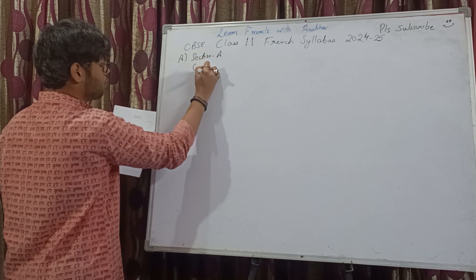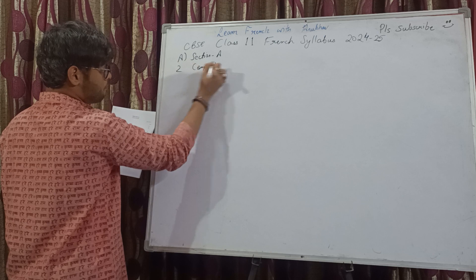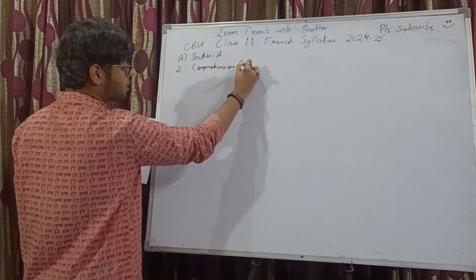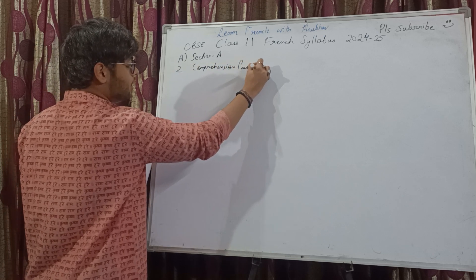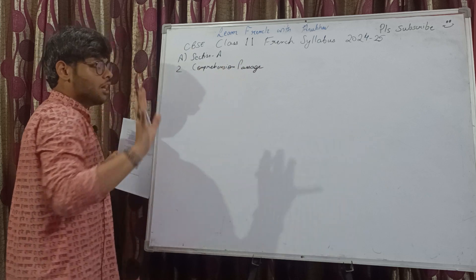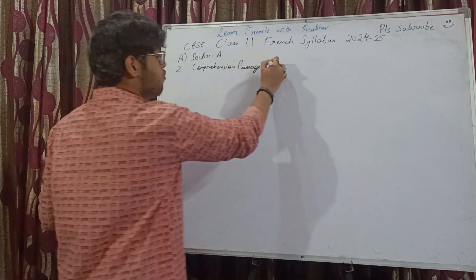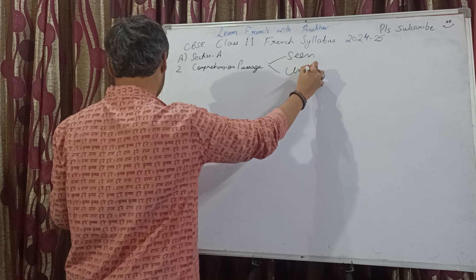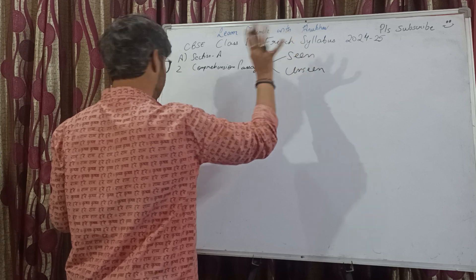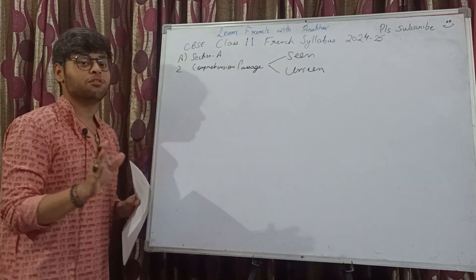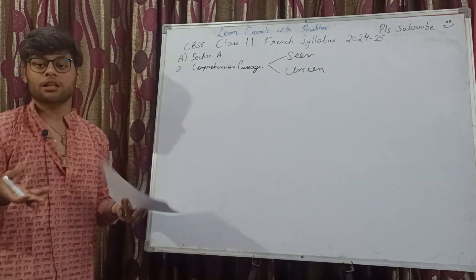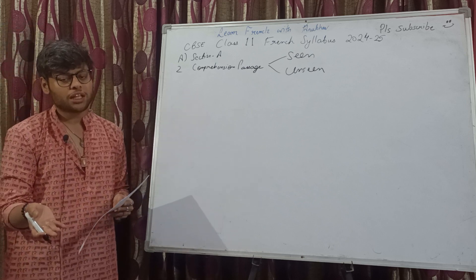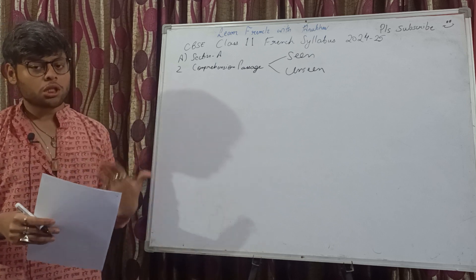Starting with Section A, you have comprehension passages — two comprehension passages. To be noted: two passages will be there. Unlike 9th and 10th where you had only one, in 11th and 12th you have two — one will be seen and one will be unseen.